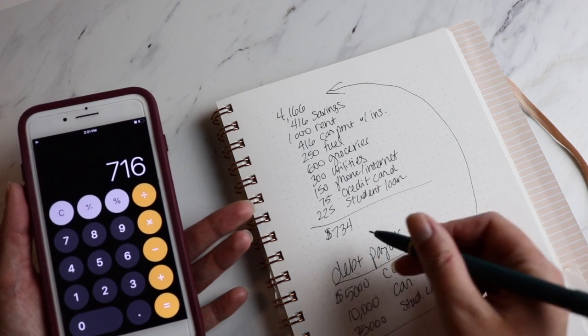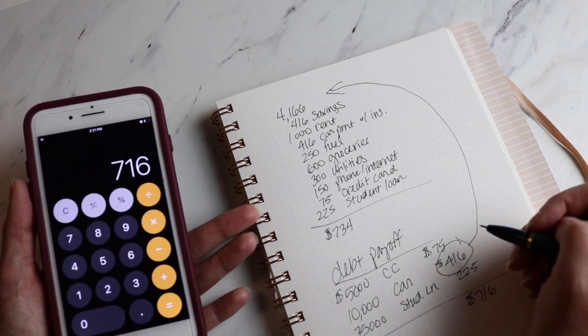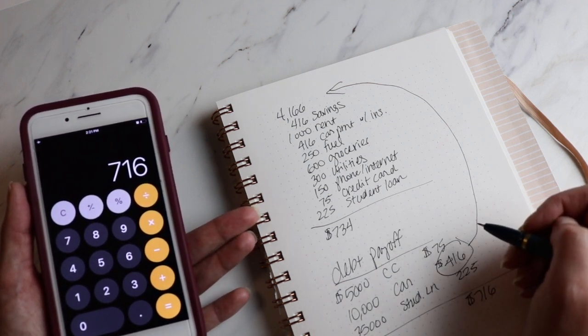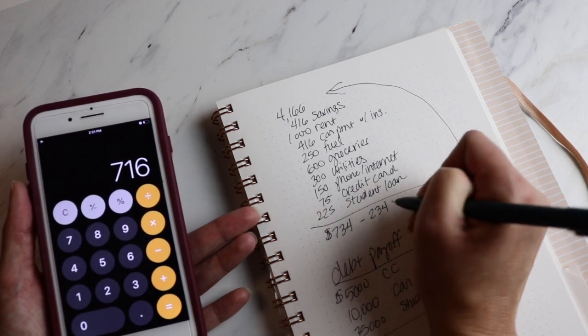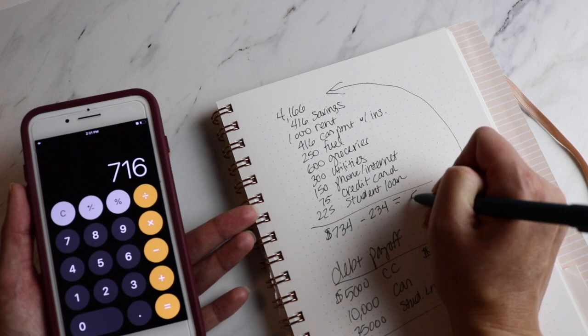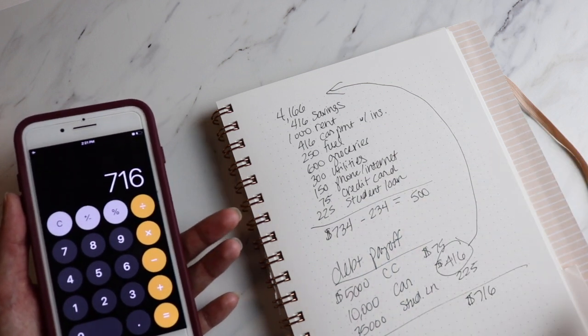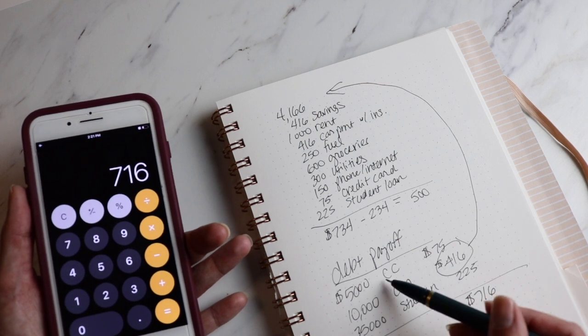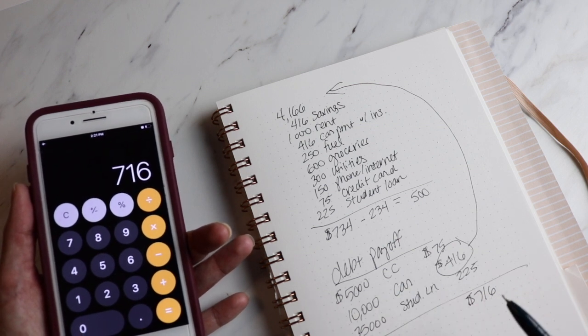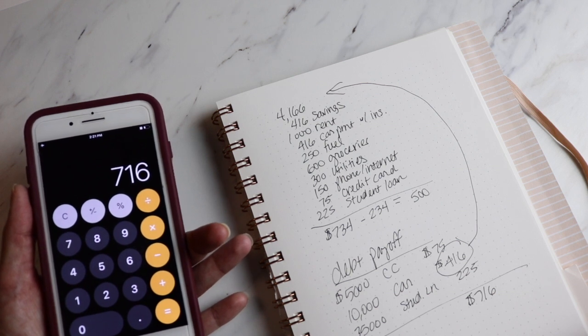Now, you have $734 left over, so make sure that you're calculating for your sinking funds and your cash envelopes. Let's just assume that you take $234 for sinking funds and cash envelopes and you have $500 to devote to your goals. Well, if you pay $575 a month to that credit card, you're going to only owe for about 8.5 or 9 months, and then that thing will be paid off.